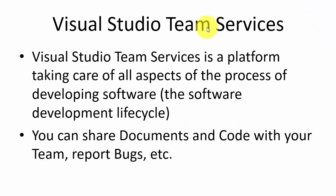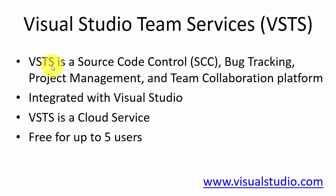Visual Studio Team Services is a platform that takes care of all aspects of the process of developing software — the entire software development lifecycle. So you can share documents and code, report bugs, and more, all within your team. With Visual Studio Team Services you can use it as a source code control system, a bug tracking system, or for project management using Agile methods like Scrum. It's a team collaboration platform, also integrated with Visual Studio. It's a cloud service, so everything is stored in the cloud and you can use it for free for up to five users.